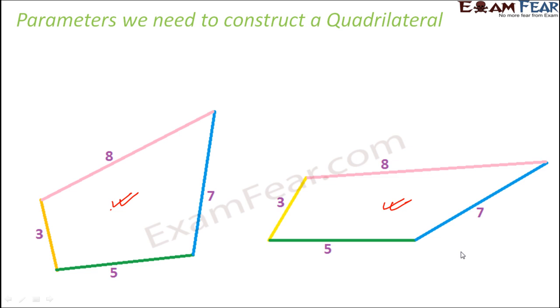we know the two diagonals and three sides of the quadrilateral. So it has to be a combination of the sides and diagonals, or sides and angles. And only then we will be able to draw a perfect quadrilateral.